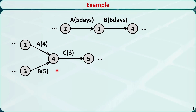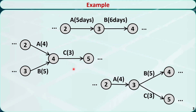This is the second example. Both activities A and B must be completed before activity C can begin. They are predecessors of activity C, and activity C is the successor of A and B. In the third example, activity A must be completed before activities B and C can begin. A is the predecessor of B and C, and B and C are successors of A.